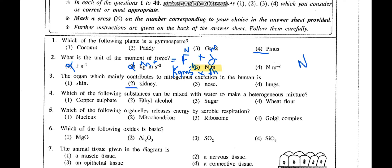Question 4: Which of the following substances can be mixed with water to make a heterogeneous mixture? A heterogeneous mixture means you can clearly observe two components — they are not dissolving. Copper sulfate forms an aqueous solution, ethyl alcohol and sugar are both soluble in water. Wheat flour is not soluble in water; you can see the whiteness remaining separately. So the answer is wheat flour.